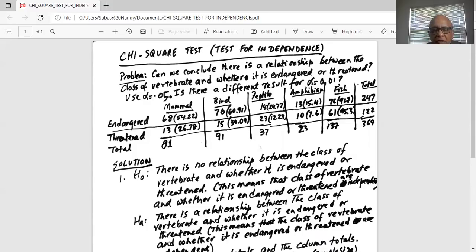Now, we add the total of all columns like 81 plus 91 plus 37 plus 23 plus 137. My grand total is 369. This is my sample size. Similarly, if I total the sum of the totals of the two rows, 247 plus 122, I also get 369. This is my sample size or grand total.